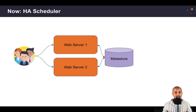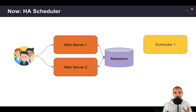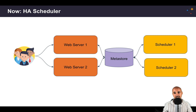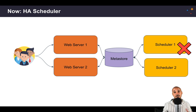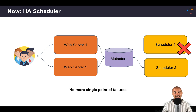You will still have multiple web servers running in parallel as was already the case in Airflow 1.10.x, and you have your metastore. But instead of having one scheduler instance, you will have multiple scheduler instances — for example, scheduler 1 and scheduler 2. Now if scheduler 1 goes down, you will still be able to schedule new tasks and new data pipelines, as the second scheduler will still be up and running. In Airflow 2.0, you have no more single point of failures, which is extremely important in production.